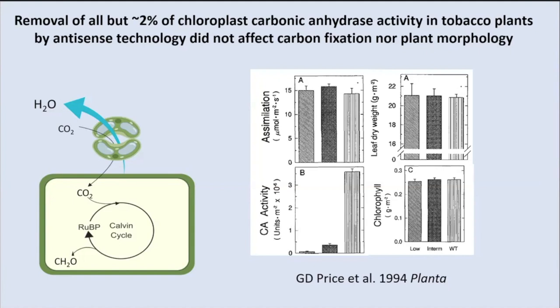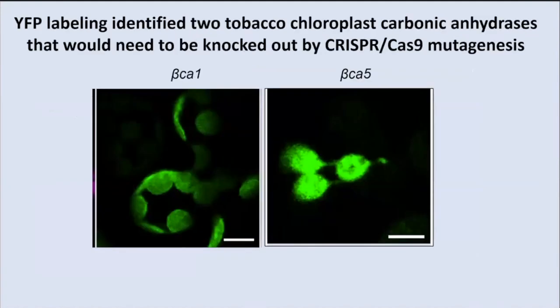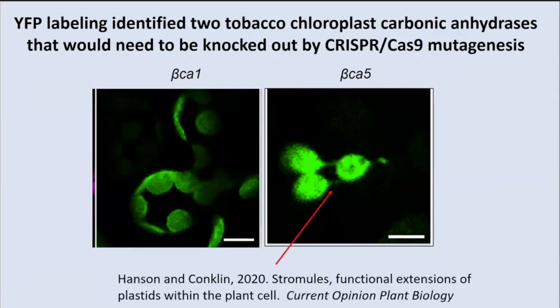Kevin labeled the putative chloroplast carbonic anhydrases with YFP to verify that these were indeed chloroplast carbonic anhydrases. You can see the chloroplasts and the stromules that we rediscovered in 1997. Patricia Conklin, a former GGD student and now a SUNY Cortland full professor, did a sabbatical with me and worked on these stromules, and we have a recent article describing the current state of what we know about stromules. But let me get back to carbonic anhydrase.